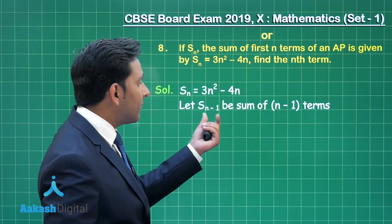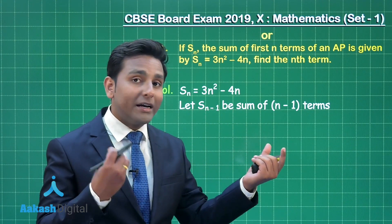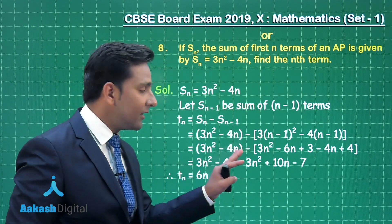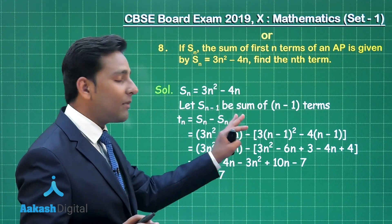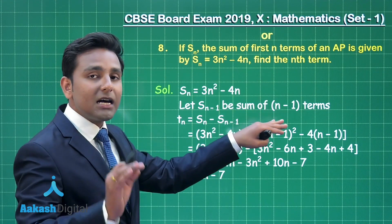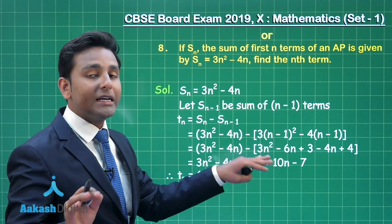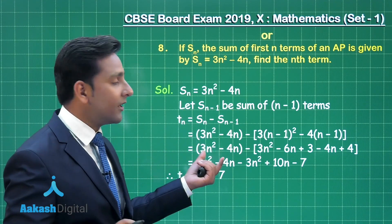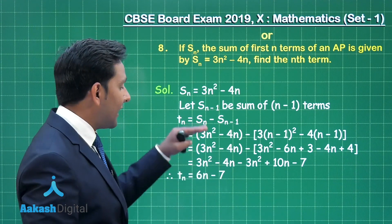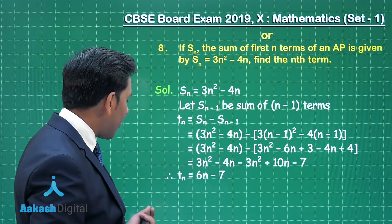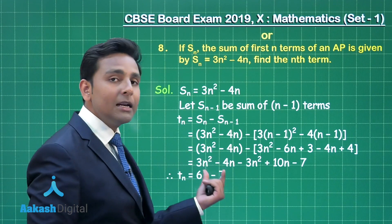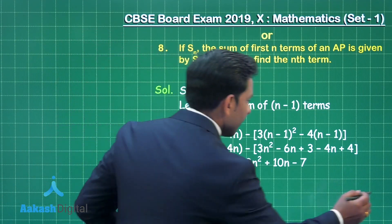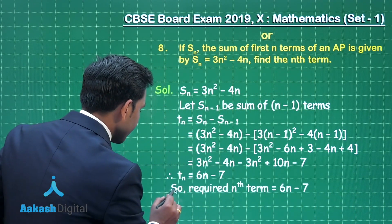We consider Sn minus 1 as the sum of the first (n minus 1) terms. Here Tn represents the nth term, Sn the sum of first n terms, and Sn minus 1 the sum of first (n minus 1) terms. Using the formula Tn = Sn minus Sn-1, we calculate and obtain the nth term as 6n minus 7, which is the answer.